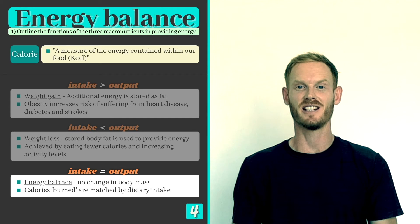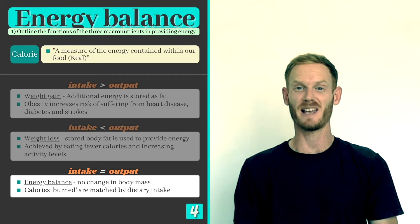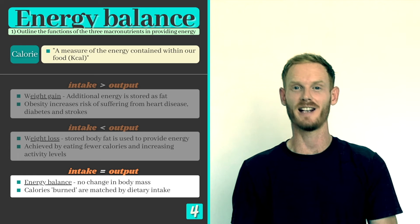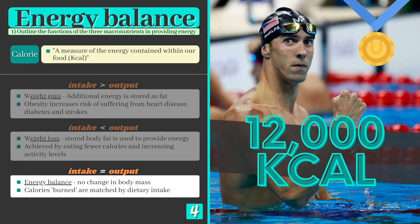Some athletes need to consume a huge amount of energy in their diet to make up for the calories burned through training and competition. Michael Phelps the most decorated swimmer of all time famously consumed up to five times as many calories as an average male just to achieve a state of energy balance.